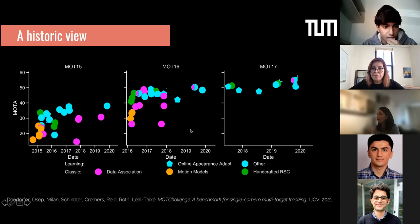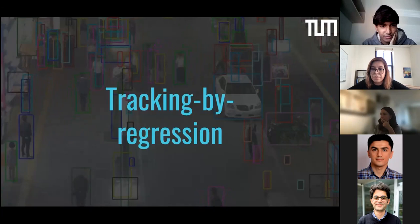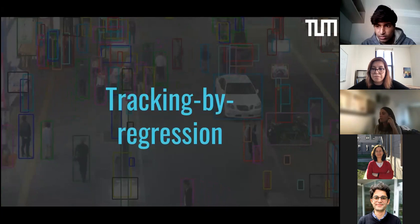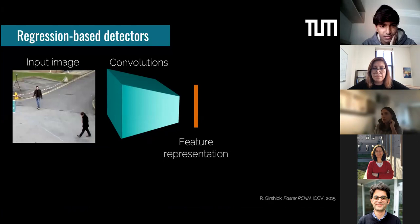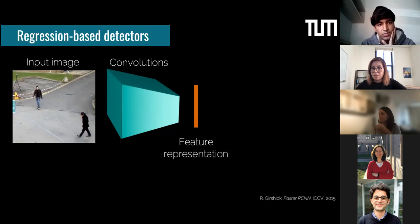Recently, a really cool paradigm appeared — tracking by regression, or what I call tracking by regression. We kind of started this line of work with our ICCV 2019 paper, in which we said we are not taking enough advantage of the detectors we have at hand. At the time, we were applying detectors frame by frame and that's it. We asked: can modern detectors, which work really well, actually do a bit more?